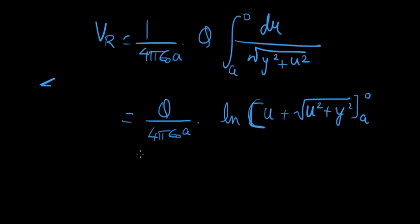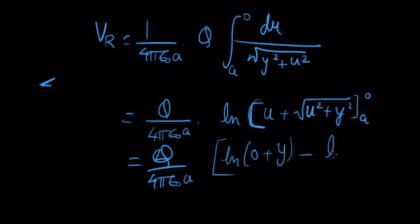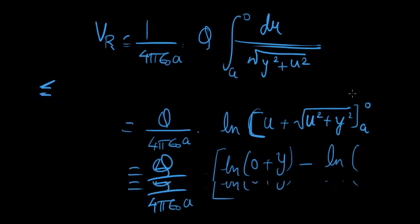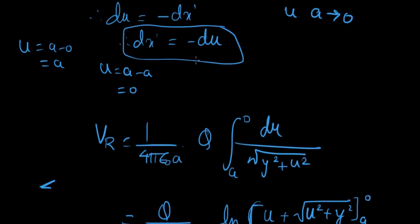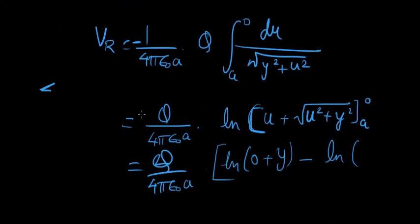Alright? So what we get when you substitute 0, you just get q over 4 pi epsilon naught A natural log, 0 plus 0 plus y squared is y squared, root of y squared is y. That minus natural log of, oh, I forgot to put a minus sign here. See, it's minus du. So it has to be minus du and put the minus outside here. I'm sorry about that. I hope you didn't get confused.